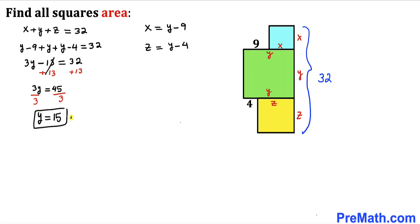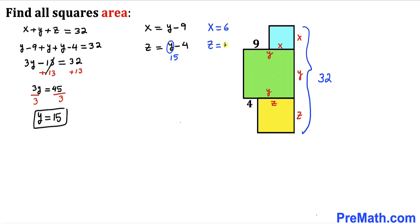Now that y equals 15, substituting back gives x equals 15 minus 9, so x equals 6 centimeters. And substituting into z equals y minus 4 gives z equals 15 minus 4, so z equals 11 centimeters. Therefore the side length of the blue square is 6, the green square is 15, and the yellow square is 11.